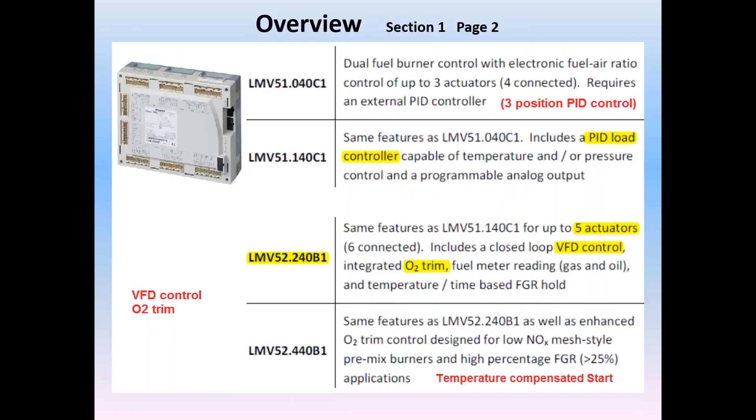So let's get started. The LMV5 is available to the American market in four versions. While I've only chosen to show part numbers for the 120 volt, 230 volt versions are available as well. These are presented in order of increasing features. First is the LMV51040.